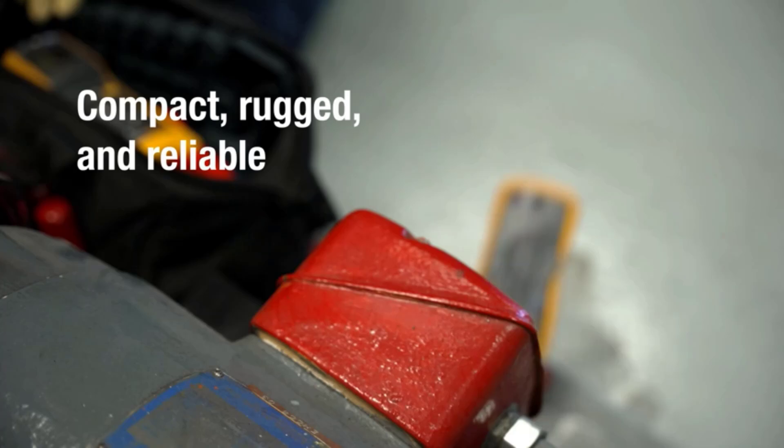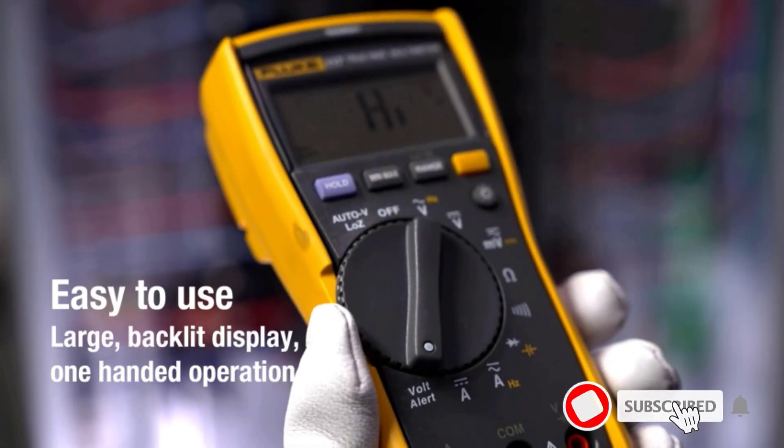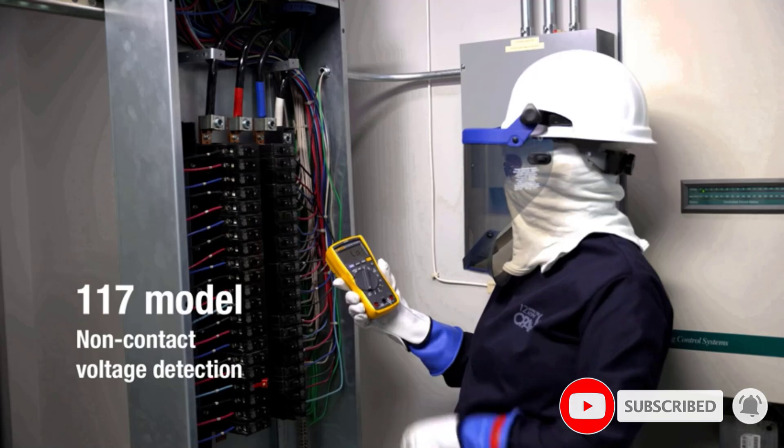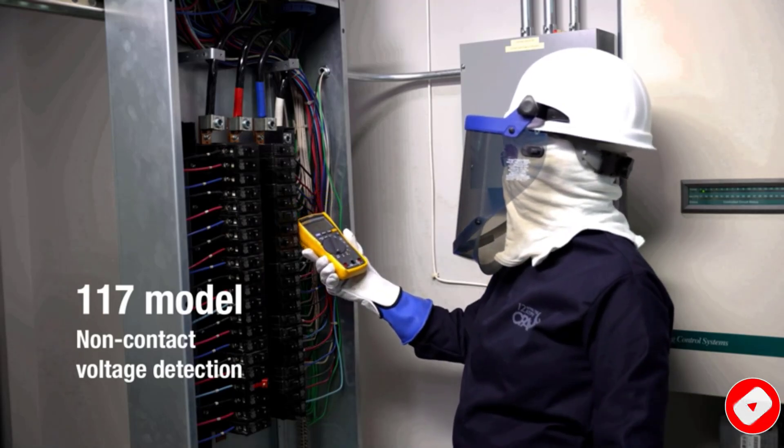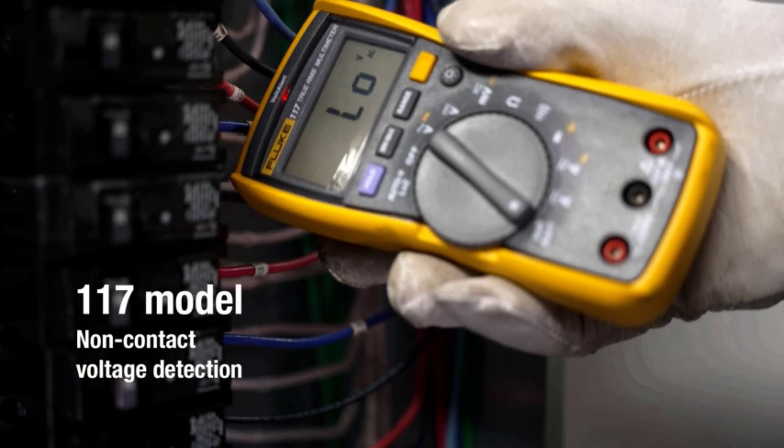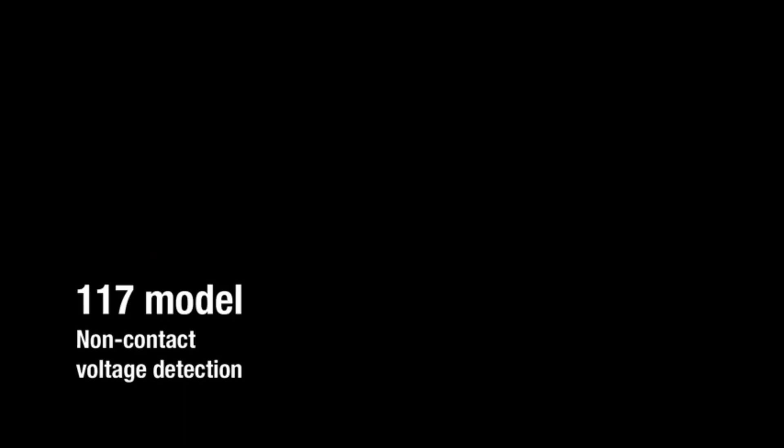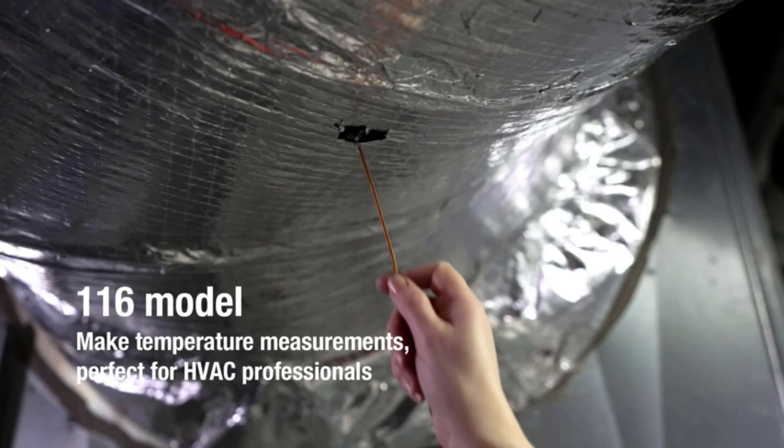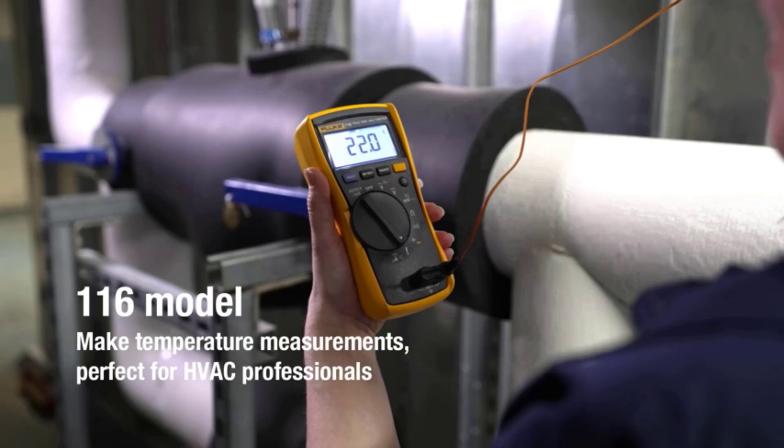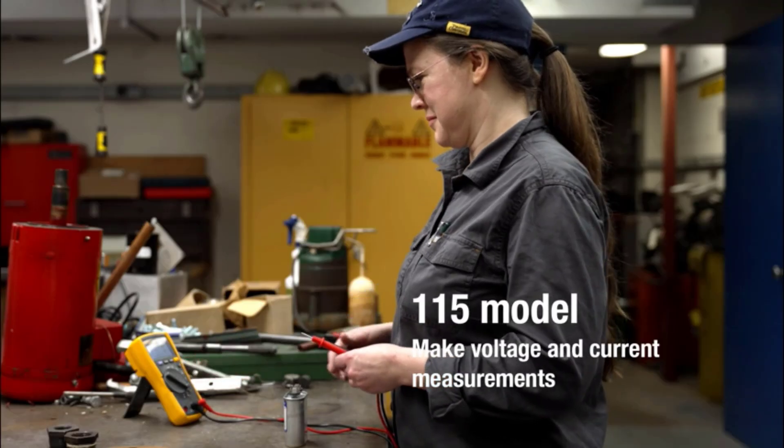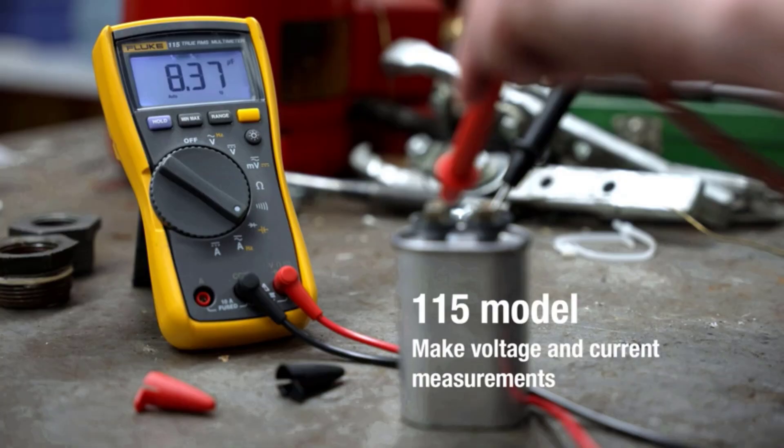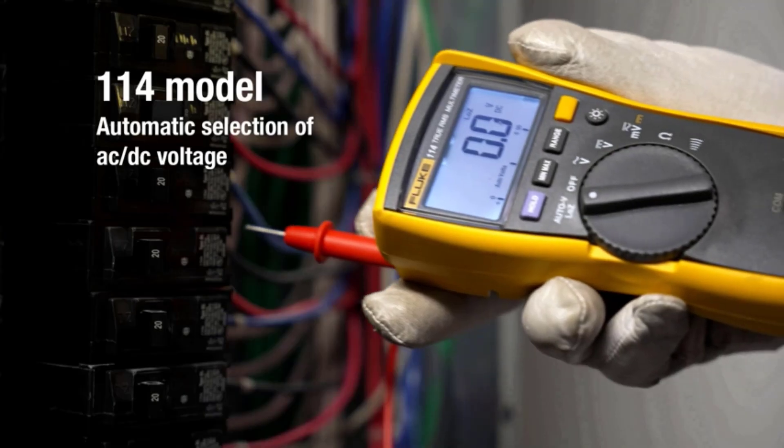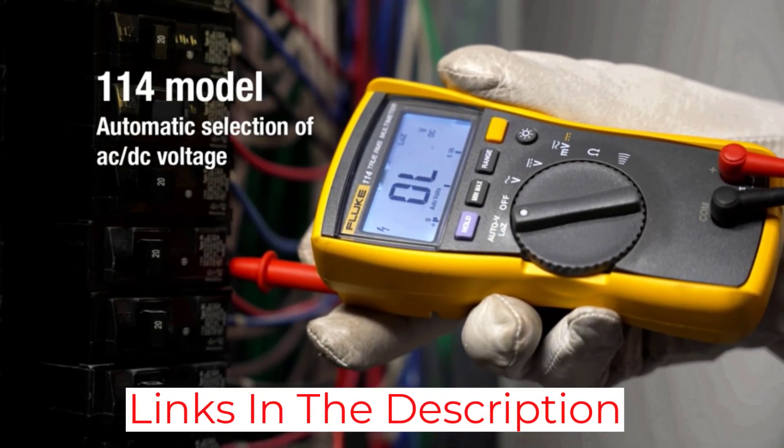We love that it features an integrated non-contact AC probe and comes with a clear and intuitive interface. This True RMS meter also has a low-impedance input that can automatically detect the type of voltage being measured and choose the appropriate range. Additionally, you can purchase a current probe separately if you need to measure anything above 10 amps.